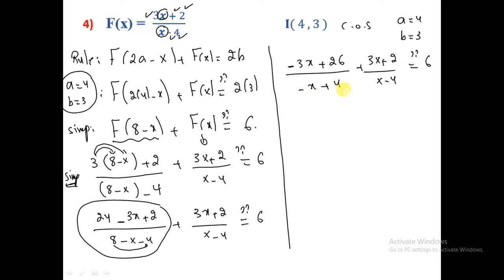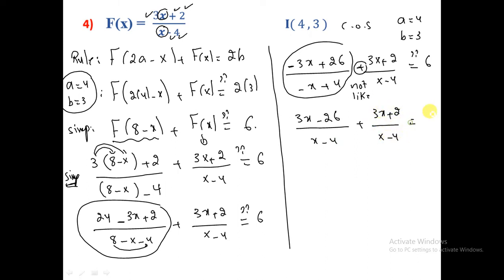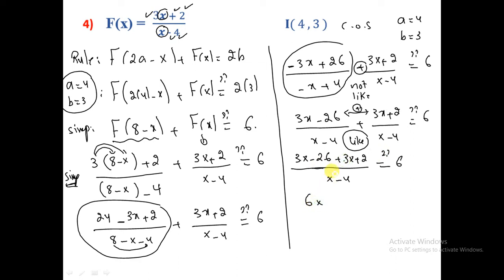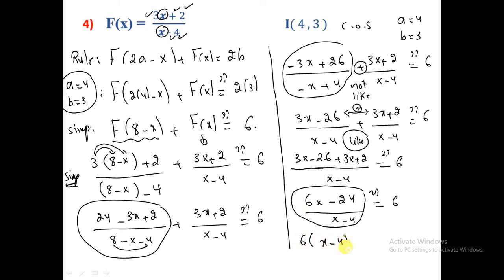Changing the sign of the first fraction: (3x-26)/(x-4) + (3x+2)/(x-4) = 6. Denominators are now like. Adding numerators: (3x-26) + (3x+2) = 6x - 24, over (x-4). Taking common factor 6: 6(x-4)/(x-4) = 6. The (x-4) cancels, giving 6 = 6, which is true.